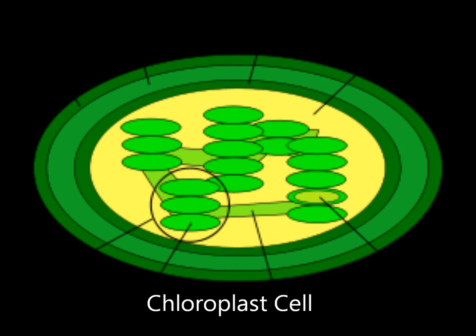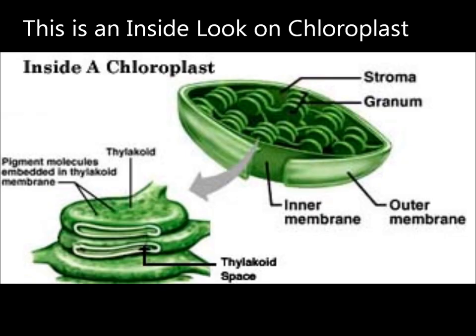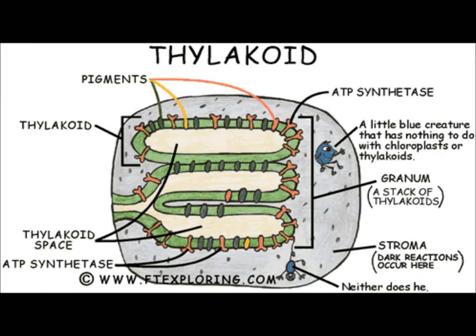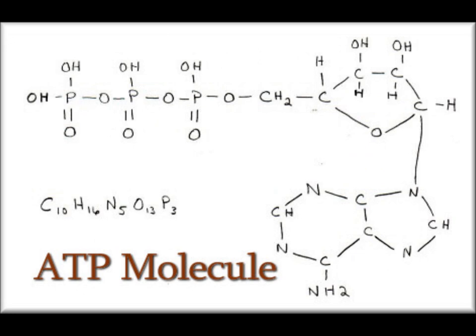When sunlight is absorbed, it gives off high-energy electrons. These electrons move through an electron carrier protein called the electron transport chain. This chain pumps hydrogen ions into the thylakoid space and through another channel called ATP synthase. This makes a phosphate group bond to an ADP molecule to form ATP molecules.